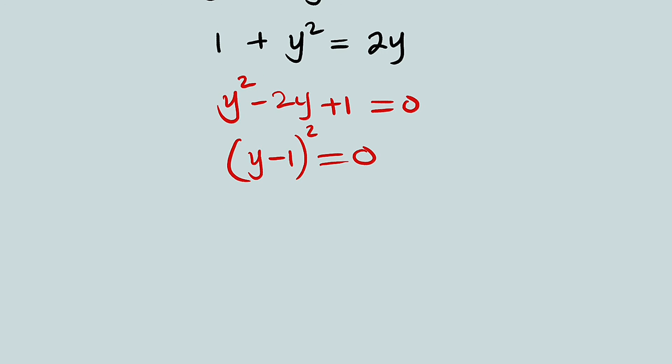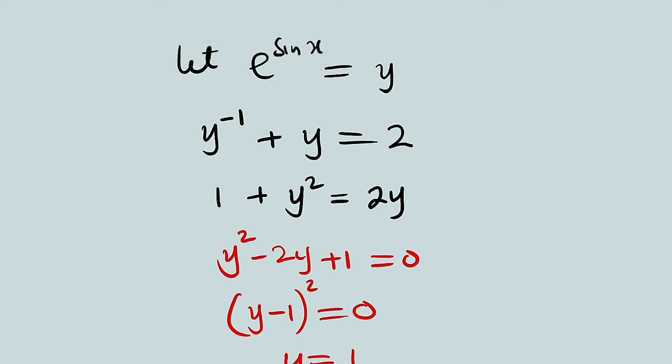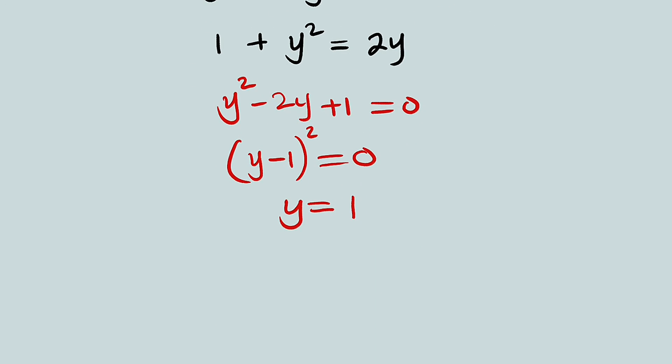If you take the square root of both sides, you have y minus 1 equal to 0, which implies that y is equal to 1. But, we have let y to be equal to e to the sine x, so we can bring it back. Therefore, e to the sine x is equal to 1 instead of y.